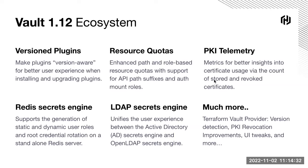Here's a brief overview of what's in this release: we've added the ability to have versioned plugins, enhanced resource quota support, added PKI telemetry, a new Redis secret engine, and an AWS ElastiCache engine. We've added a new unified LDAP engine — taking the existing OpenLDAP engine and Active Directory engine and merging them into a single LDAP engine for ease of use. We've updated the Terraform provider and much more. This covers the open source side; we'll cover the enterprise features shortly.